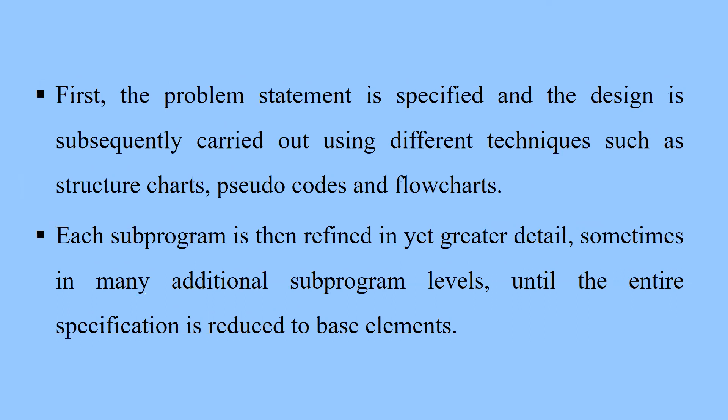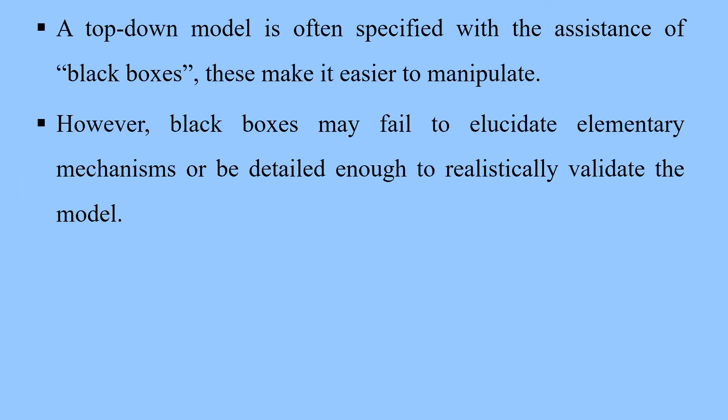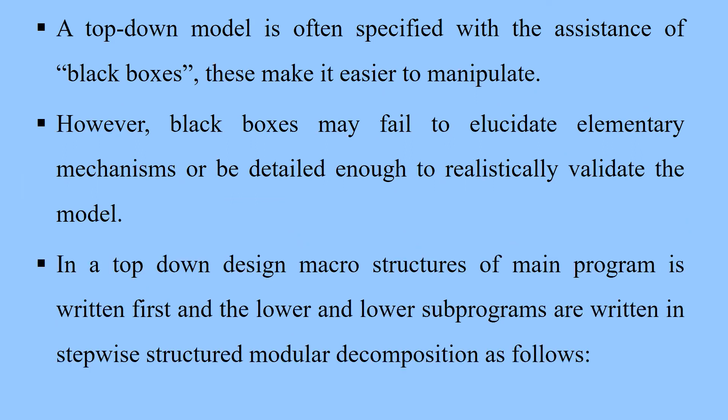Each sub-program is then refined in yet greater detail, sometimes in many additional sub-program levels, until the entire specification is reduced to base elements. A top-down model is often specified with the assistance of what we call black boxes, that make it easier to manipulate. However, black boxes may fail to elucidate elementary mechanisms or be detailed enough realistically to validate the model. In a top-down design, macrostructures of the main program are written first and then lower and lower sub-programs are written in stepwise structured modular decomposition.